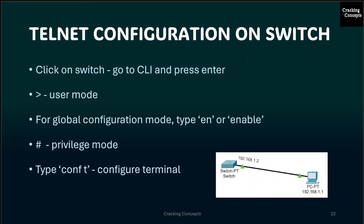Then we have the switch, which connects multiple devices to create a network. In the switch, we go into the command line interface and press Enter. This is the user mode, indicated by the angle bracket symbol. To make global configuration changes we type EN or enable, and the symbol changes to a hash, meaning we've entered privilege mode. Then we type conf t to configure the terminal, and assign a hostname to the switch — I'm changing it to SWITCH in all capitals using the command hostname followed by SWITCH.